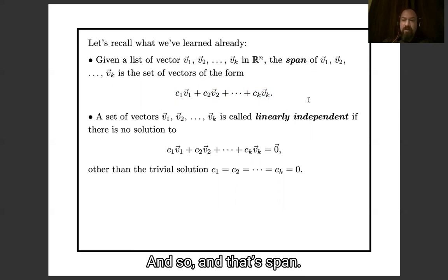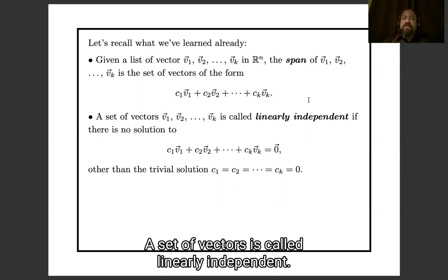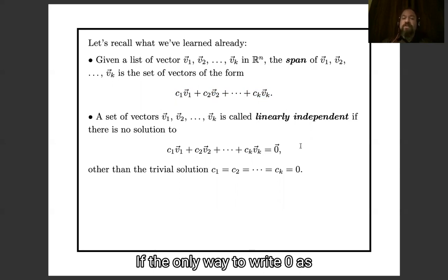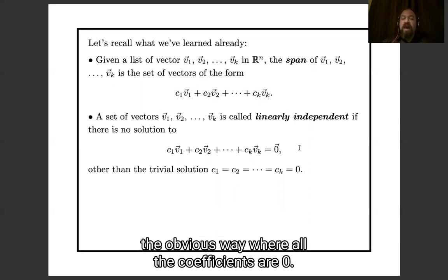And so that's span, and we also had the notion of linear independence. A set of vectors is called linearly independent if the only way to write zero as a linear combination of those vectors is the obvious way where all the coefficients are zero.